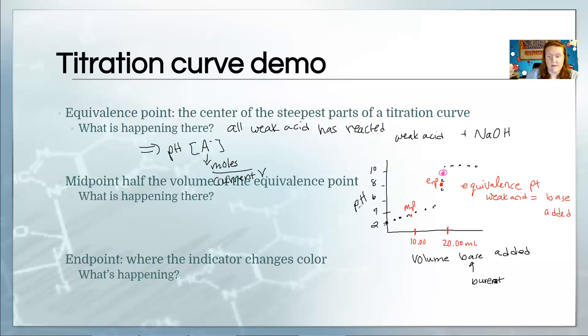At the midpoint, what has happened is half of the acid has been converted, has reacted. And it's going to form an equal amount of conjugate. So this would be a situation where the pH is not changing rapidly. In fact, we have a name for this area. We call this the buffer zone.